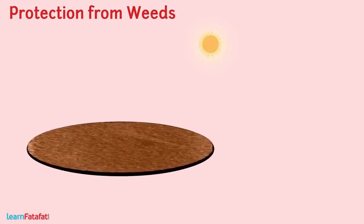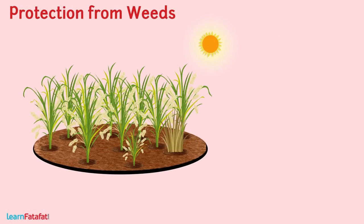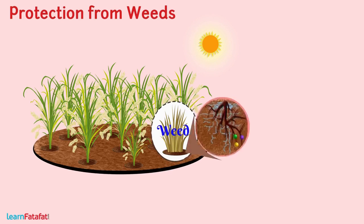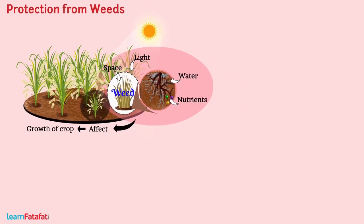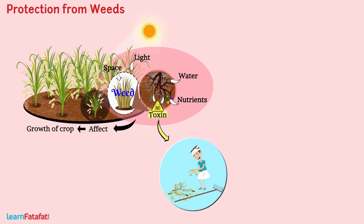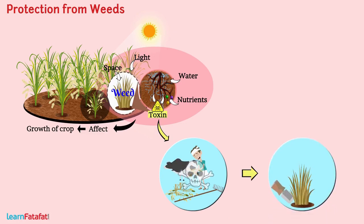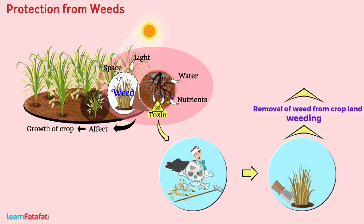In the field, all plants other than crop plants are called weeds. Weeds consume water, nutrients, space, and light, and their presence affects the growth of crops. Some weeds also release toxins which may damage crop plants and are hazardous to animals and human beings. Therefore, weeds must be removed from croplands. The removal of weeds from cropland is called weeding, and it must be done before the flowering of crop plants.